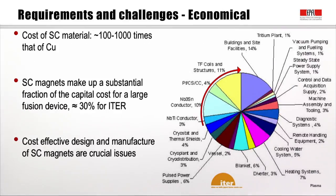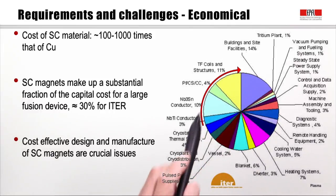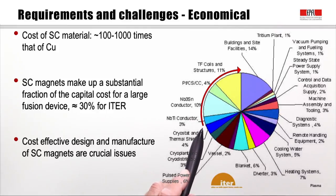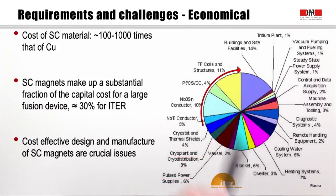Economically, the cost of materials for superconducting coils is about 100 to 1000 times that of copper. As a consequence, superconducting magnets make up a very substantial fraction of the total cost of a large fusion device. In ITER's cost breakdown, conductors for the superconducting magnets — Nb₃Sn, NbTi, and coil structures — amount to about 30% of capital cost. Cost-effective design and manufacture are therefore absolutely crucial.